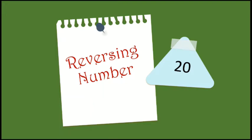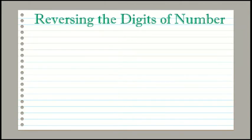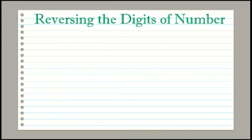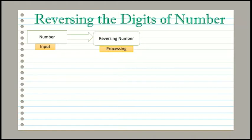Hello students, welcome to the 20th session of C programming. In today's session we will see how to reverse the digits of a given number, and then we will see how to write the algorithm for reversing the number. The given problem is that you have to reverse a given number — for example, if the given number is 146, the output should be 641. The number to reverse is the input, reversing it is the processing part, and printing the reverse number is the output part.